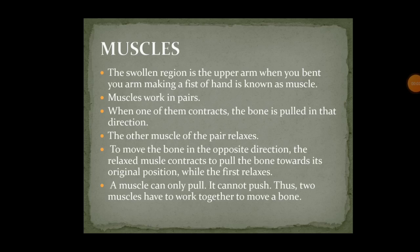Other than bones and cartilages, there is one more thing present in our body that helps us to work — these are known as muscles. The swollen region in the upper part of your arm when you bend it making a fist is known as a muscle. Muscles work in pairs: when one contracts, the bone is pulled in that direction and the other muscle of the pair relaxes. To move the bone in the opposite direction, the relaxed muscle contracts and pulls the bone back, and the first muscle relaxes. The muscle can pull — it cannot push. Thus, whenever any work is required to be done by a muscle, there is always a pair present and not only a single muscle.